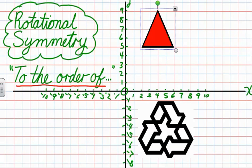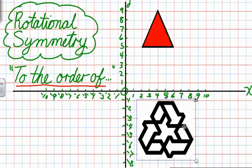Let's have a look at this other shape down here. This is a recycling symbol. And as I turn it, let's see how many times the shape looks exactly the same. Every time it looks exactly the same, that means that we have to add one more order.